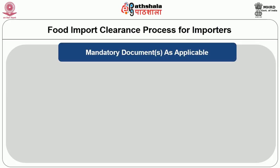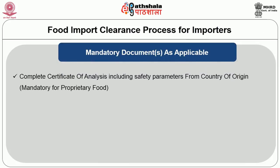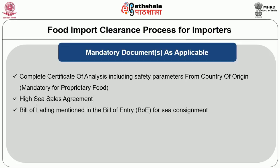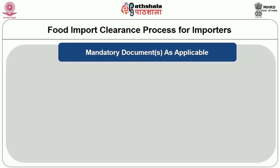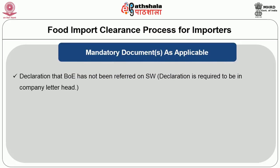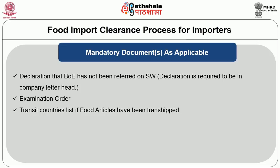Whichever documents are applicable for the particular commodity must be submitted. These include: Complete Certification of Analysis including Safety Parameters from Country of Origin (mandatory for preparatory food), High Sea Sales Agreement, Bill of Lading mentioned in the Bill of Entry (BOE) for sea consignment, Ingredients List, Specimen Copy of the Label, Declaration that Bill of Entry has not been referred to SE (in Company's Letterhead), Examination Order, Transit Countries List if the food article is trans-shipped, Invoice and Performa Invoice, Packing List, and Self-Declaration Documents.